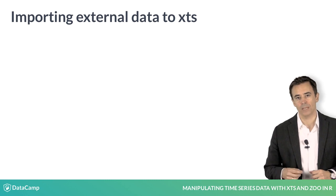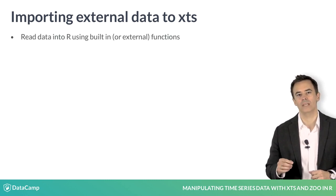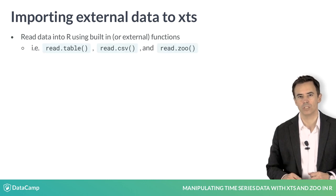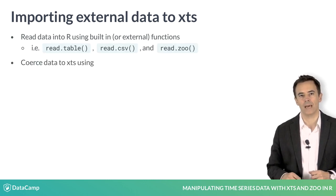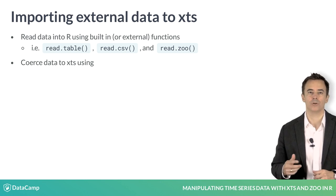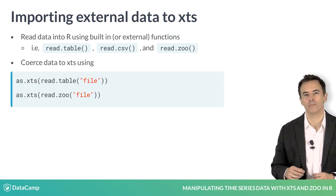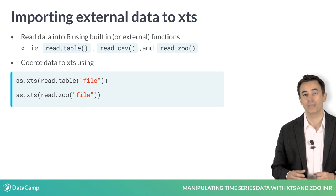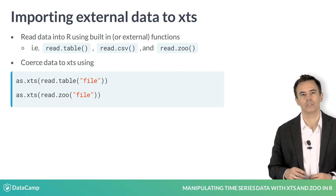To import data from the outside, we can follow a similar pattern. We can read data into R using built-in functions such as read.table and coerce into XTS at that point. Since XTS is a proper subclass of Zoo, you can also leverage the powerful tools Zoo provides. read.zoo is a great tool to read in data as a time series, and as.xts() will dutifully convert it to its final XTS class if desired.